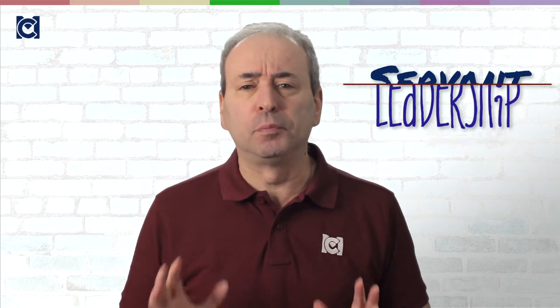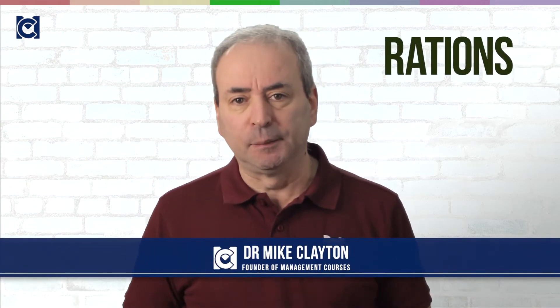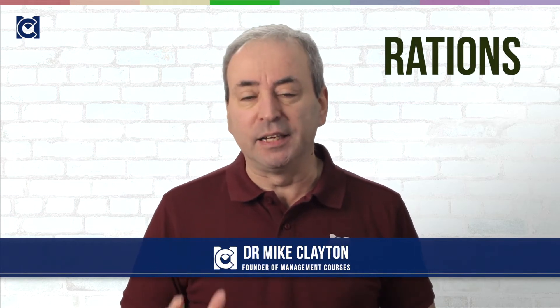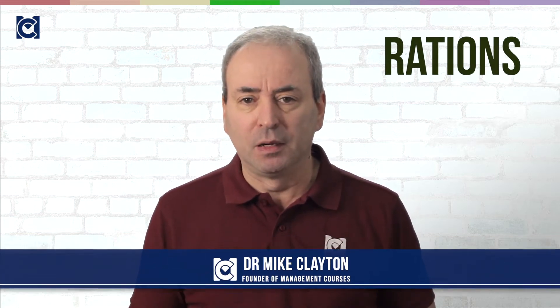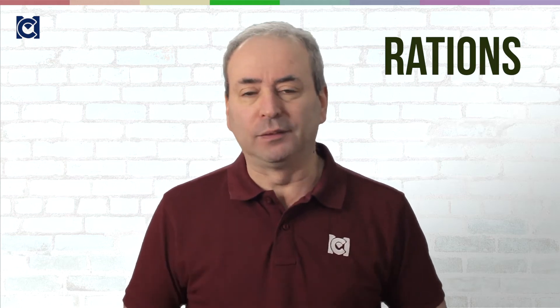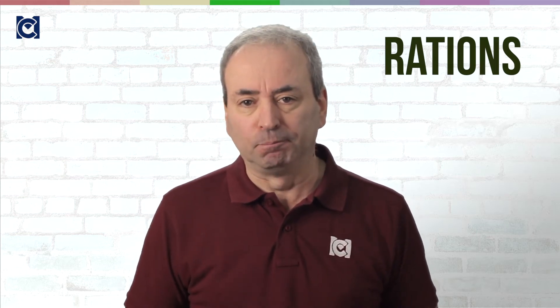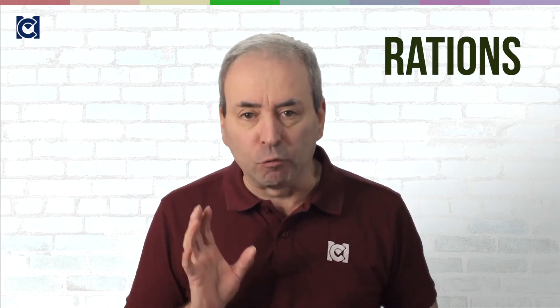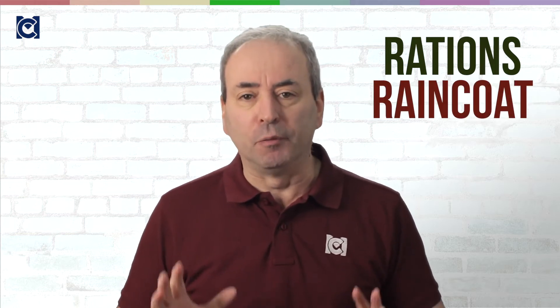And a servant leader has two primary roles. The first is providing for their team, giving them the things they need, if you like, their rations. And the second is defending the team from the things that are going to stop it working well together and getting its job done. If you like, providing a raincoat that protects them from the rain.